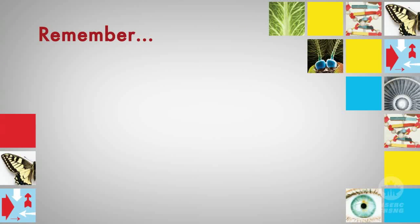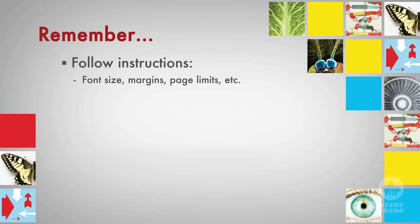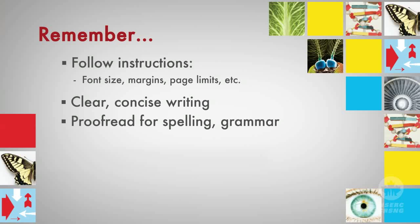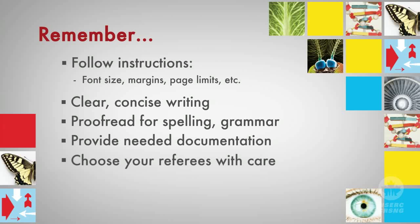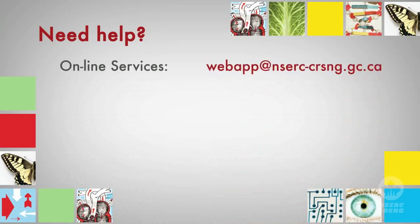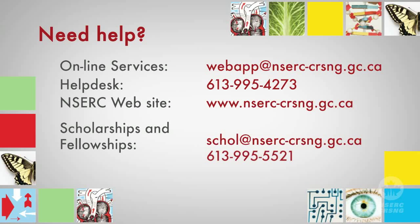We would like to leave you with these last reminders. Follow instructions — pay attention to font size, margins, page limits, etc. Make sure you use clear, concise writing. Proofread for spelling and grammar. Be sure to provide all needed documentation. Choose your referees with care. And be aware of the deadline. NSERC's online resources also include two other videos: one that offers tips on making your application stand out for reviewers, and another that explains the peer review process that happens after you submit your application. If you have questions, please refer back to the instructions for completing Form 201 or other documents on our website, or contact us directly.